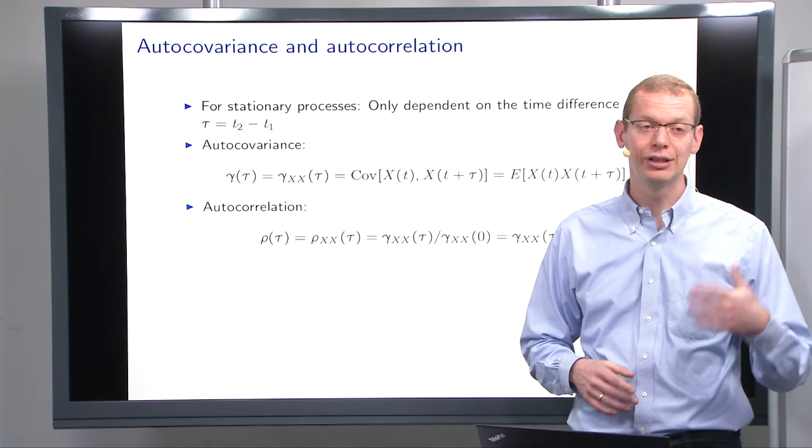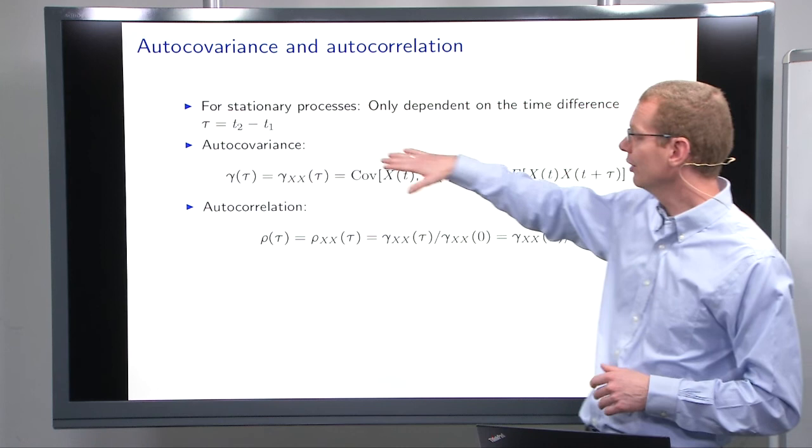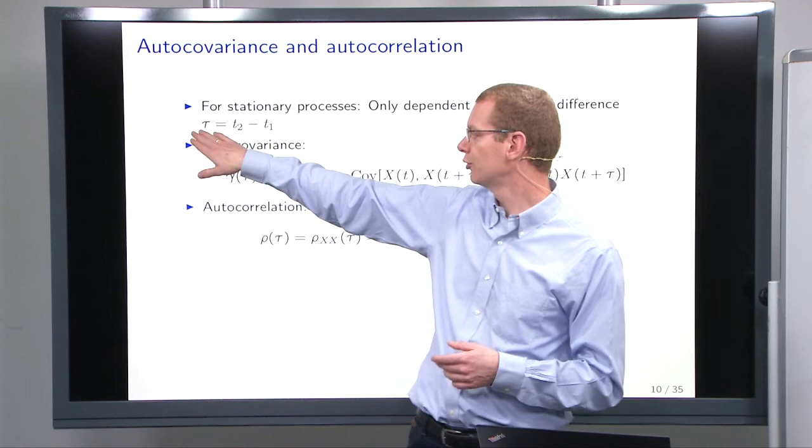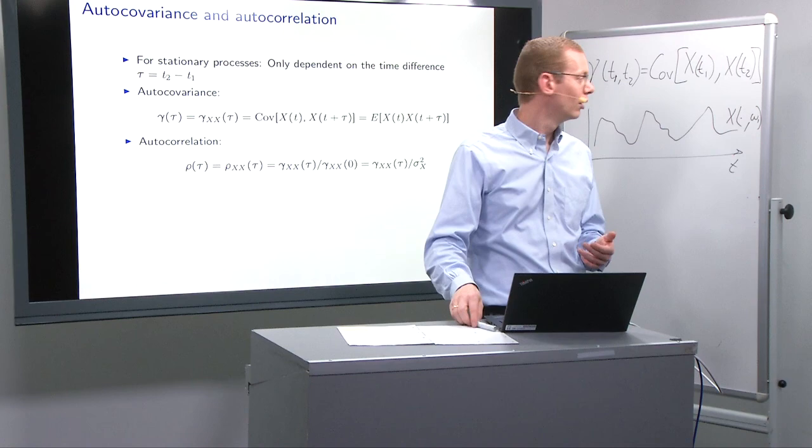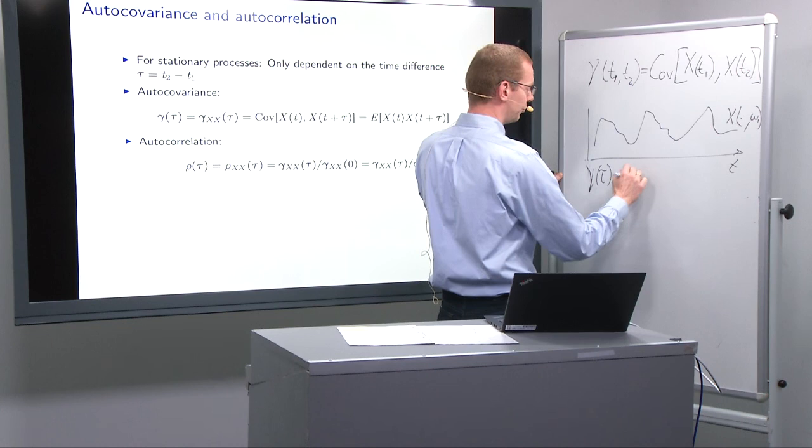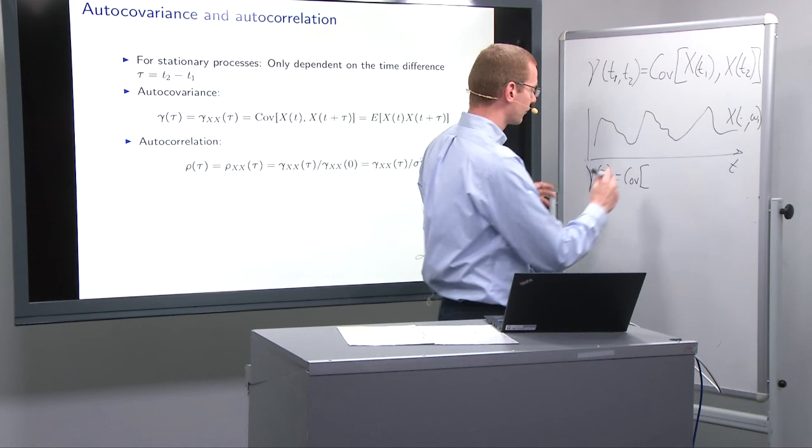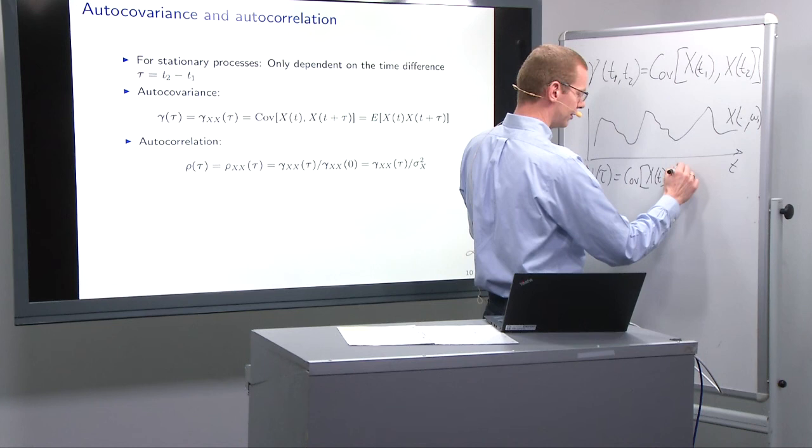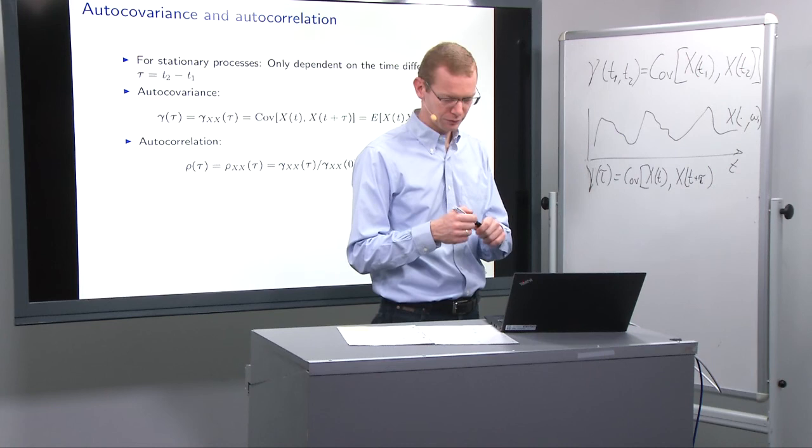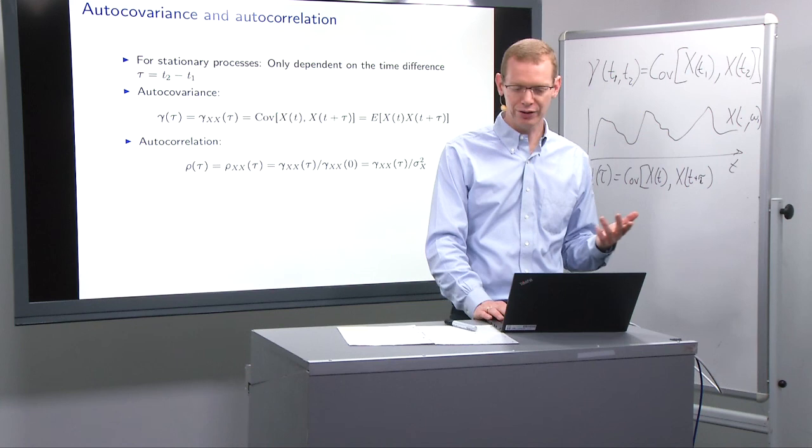Now, the next element here is the autocovariance and autocorrelation. What we mentioned earlier on is that for stationary processes, well, then it only depends on the time difference. And rather than writing T2 and T1 all of the time, we will just use tau as a time difference when looking at the autocovariance. So rather than having the definition up here, we will use gamma of tau equals the covariance of XT and XT plus tau. Like that. Okay. So that's the autocovariance.